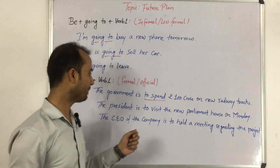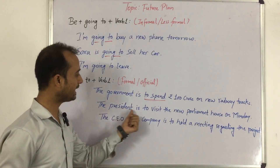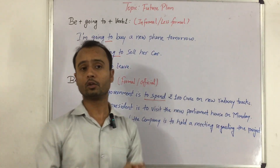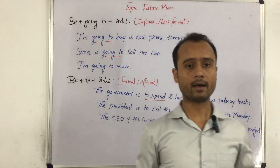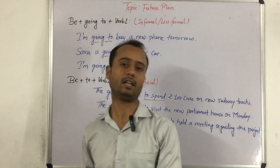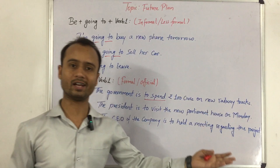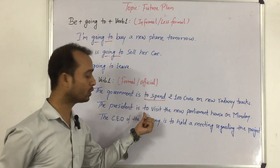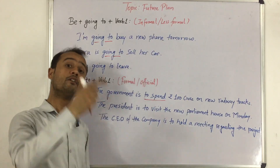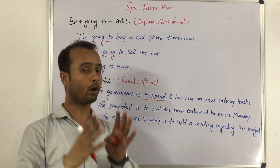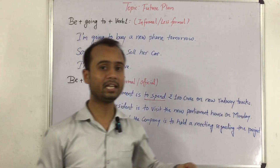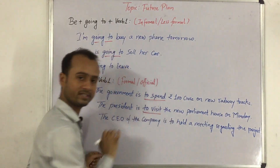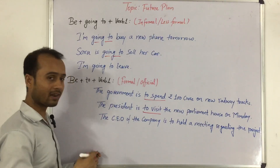The next example is: 'The president is to visit the new parliament house on Monday.' So humare rashtrapati naye parliament house mein Monday ko jane wale hai, Monday ko vahan visit karne wale hai. Again, 'going to' nazar nahi aa raha hai because it is a formal sentence. So formal and official language mein hum log future plan batane ke liye 'going to' use nahi karte — so 'the president is to visit.'